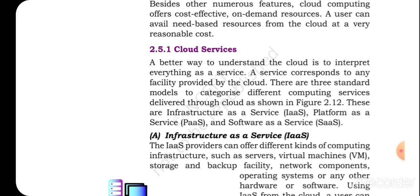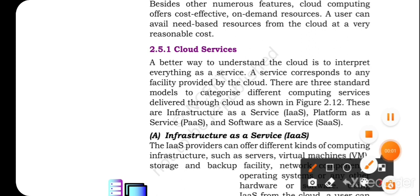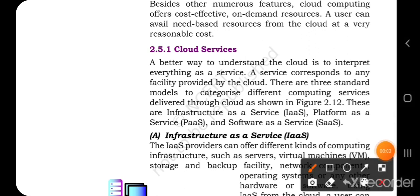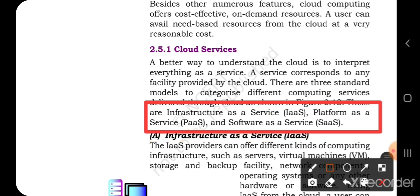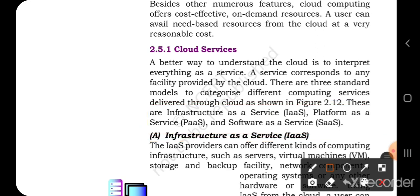Now we are going to talk about the services — how many types of services are available. There are different types of services available on the cloud. If we categorize cloud services, we can see that there are three types: the first is Infrastructure as a Service, the second is Platform as a Service, and the third is Software as a Service. These are the three services we can use in cloud computing.